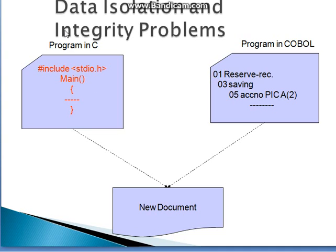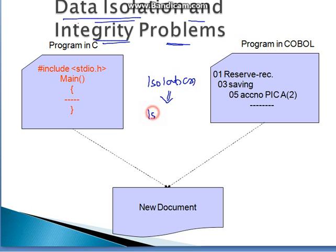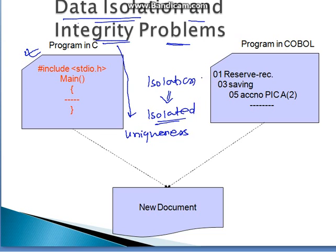What we are looking at here is data isolation and integrity problems. Isolation means the data is being isolated at one place, and integrity is nothing but the oneness or uniqueness problem. For example, there is a program written in C as well as a program written in COBOL, and both are accessing the document which contains the data.